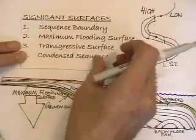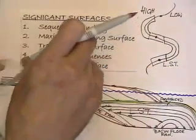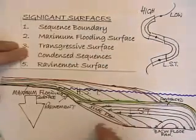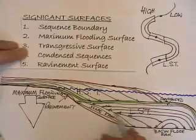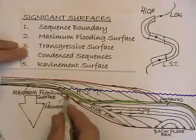This allows the paleontologist or micropaleontologist to age date these sequences. And then another important surface is the ravinement surface, which can in some cases be mistaken for the underlying sequence boundary.